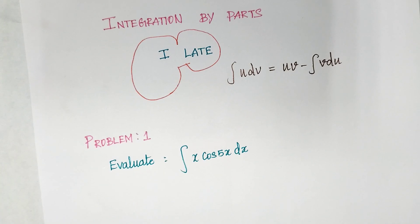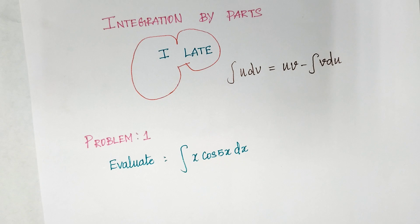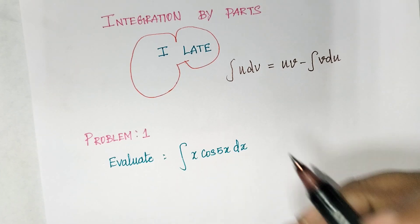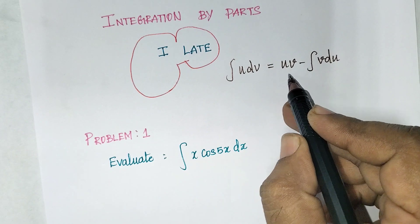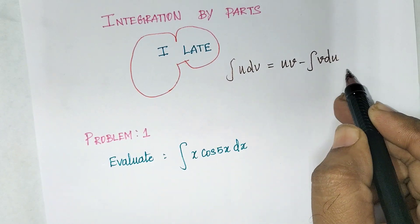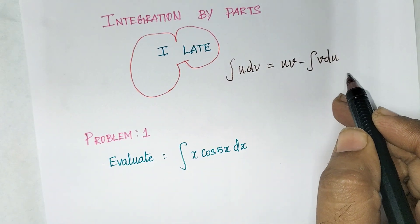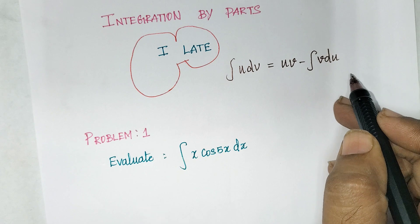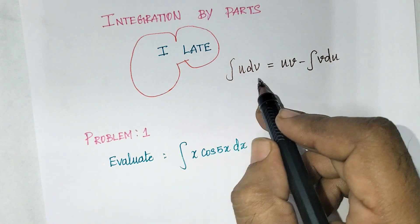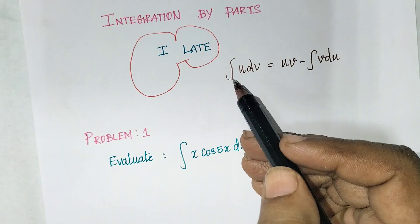Welcome to Carried Guidance Max playlist. In this video we are going to see integration by parts. The formula is: integral u dv equals u·v minus integral of v·du. Here we have to fix u first; the rest of the values are dv.